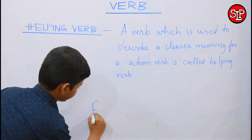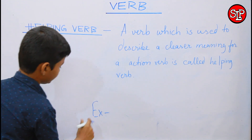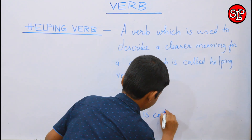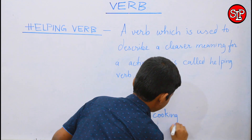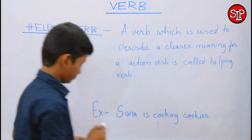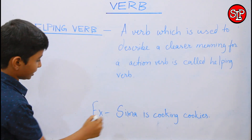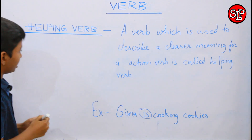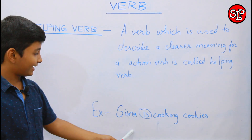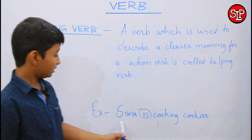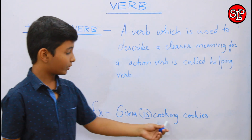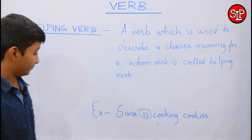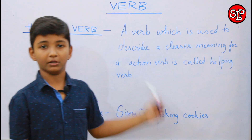So, the example is: Sima is cooking cookies. So, in this sentence, 'is' is a helping verb because it tells us that Sima is cooking cookies in the present time. So, 'is' is a helping verb.